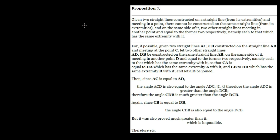Let's move on to Proposition 7: given two straight lines constructed on a straight line from its extremities and meeting at a point, there cannot be constructed on the same straight line from its extremities and on the same side of it two other straight lines meeting in another point and equal to the former two respectively, namely each to that which has the same extremity with it. It sounds rather complicated but it's actually not too bad.